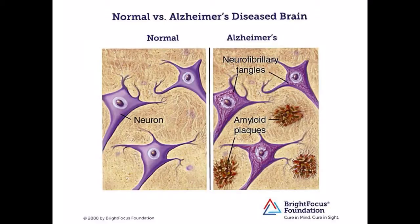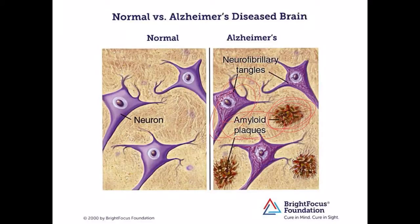However, in individuals with Alzheimer's, there are three main problems that come up. The first are amyloid plaques. These amyloid plaques are abnormal deposits of protein fragments, and they are most commonly the beta-amyloid 42, which can affect neurotransmitter communication.